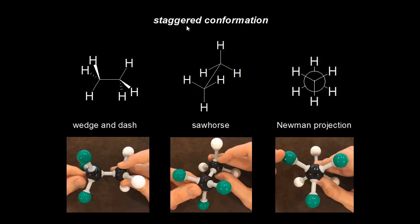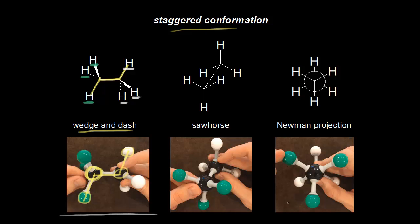Now that we've seen the video, let's look at three ways to represent the staggered conformation of ethane, starting with the wedge and dash drawing. You can see that this hydrogen, this carbon, this carbon, and this hydrogen are all in the same plane, which is why all these bonds are drawn as straight lines in our wedge and dash drawing. For the carbon on the left, there is a hydrogen in green coming out at us in space, a hydrogen in green going away from us in space, and a hydrogen in the plane of the page. For the hydrogens in white, one is in the plane of the page, one is coming out at us, and one is going away from us.